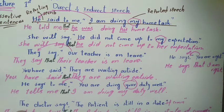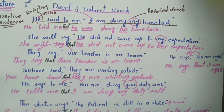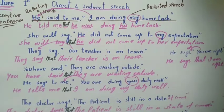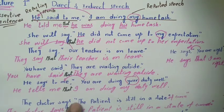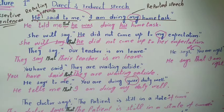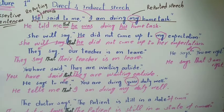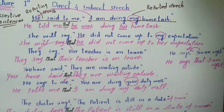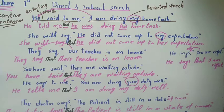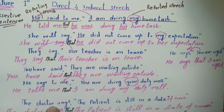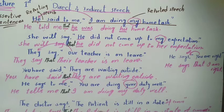Next example: 'The doctor says, the patient is still in a state of coma.' The reporting speech is present tense, so we use 'that' and do not change the tense. The patient is singular third person and stays the same. The indirect sentence is: 'The doctor says that the patient is still in a state of coma.'